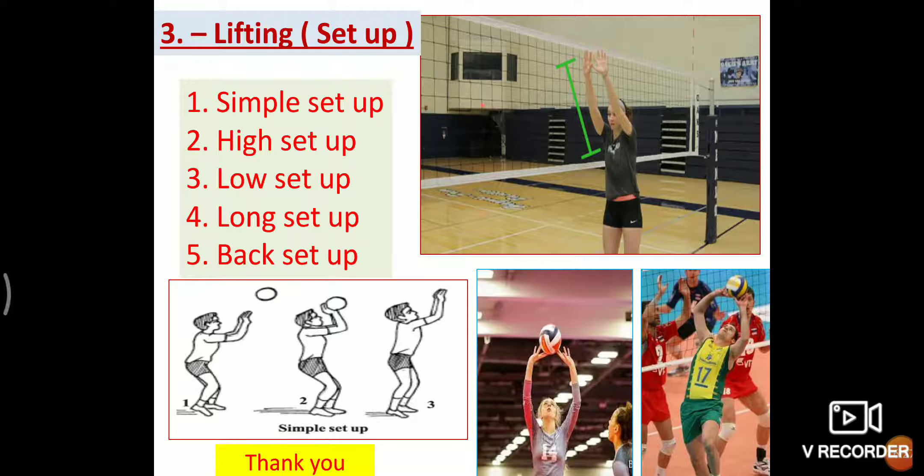Third skill, lifting or set up. In volleyball games, when ball is set fairly high and close to the net for smashing, it is called lifting. Following are the types of lifting: simple setup, high setup, low setup, long setup, and back setup. First, simple setup. In this type of setup, player lifts the ball between him and smasher, 25 centimeters to 35 centimeters high over the net. Then smasher takes one or two steps toward net and jumps to hit the ball forcefully to send to the opposite side.